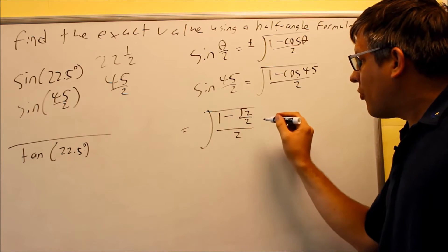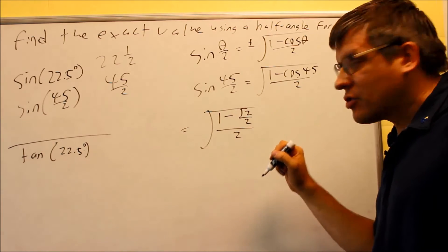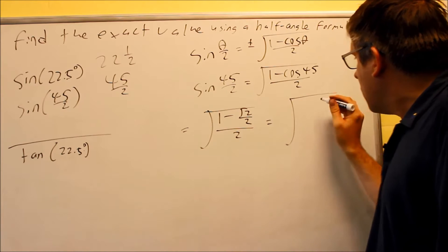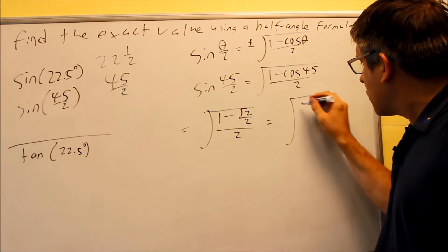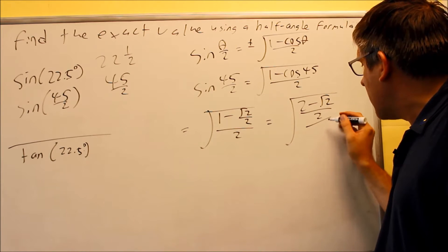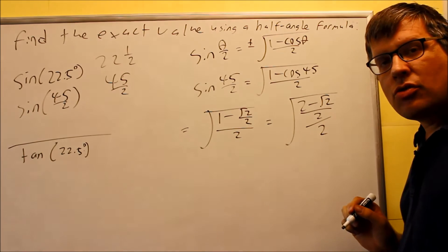I want to still keep simplifying this. I want to get rid of the double fraction. So I want to get some common denominators on the inside there. So when I do, I'll multiply this one by 2 over 2. So I'll get 2 minus radical 2. All that's going to be over 2. And then I still have this divided by 2 on the bottom.